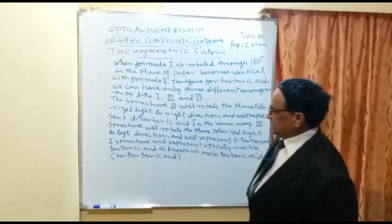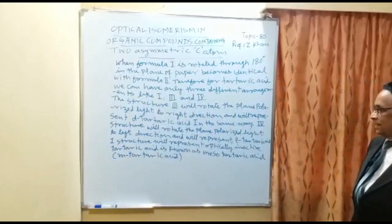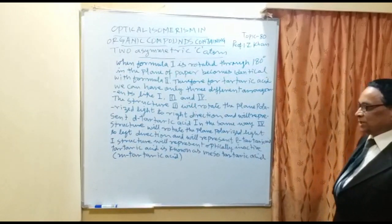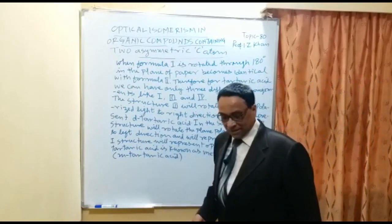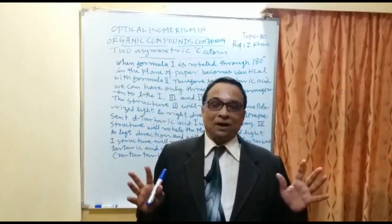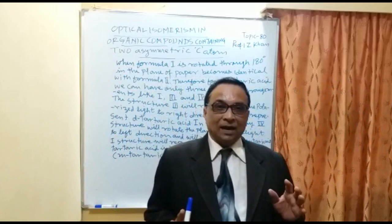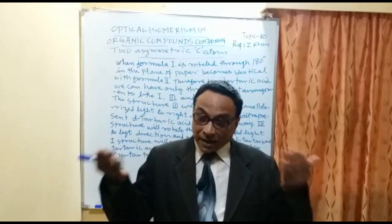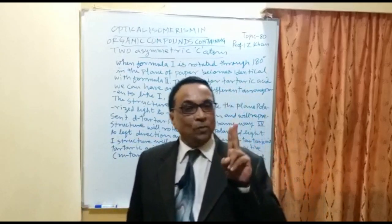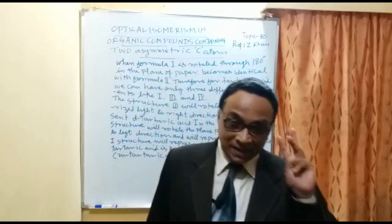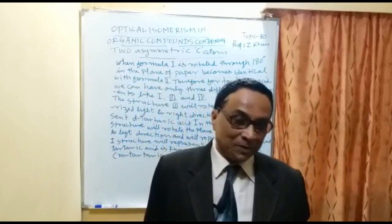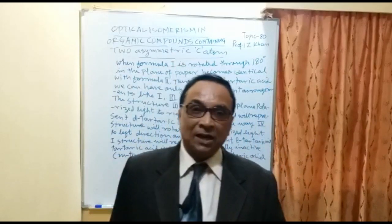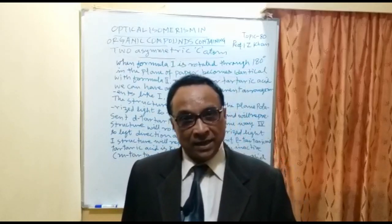Structure one represents optically inactive tartaric acid, known as meso tartaric acid, given by M-tartaric acid. So there are three types of optical isomeric forms of tartaric acid, which contains two asymmetric carbon atoms: the meso form, the dextro form (D-tartaric acid), and the levo form (L-tartaric acid). Thank you very much.